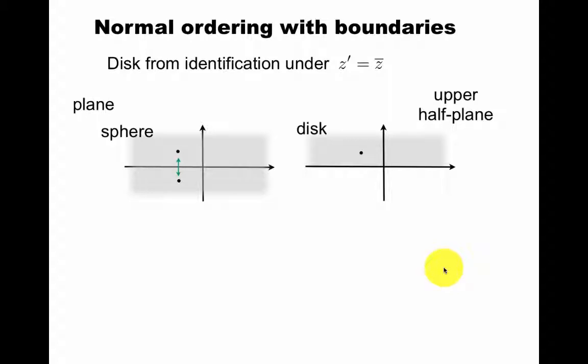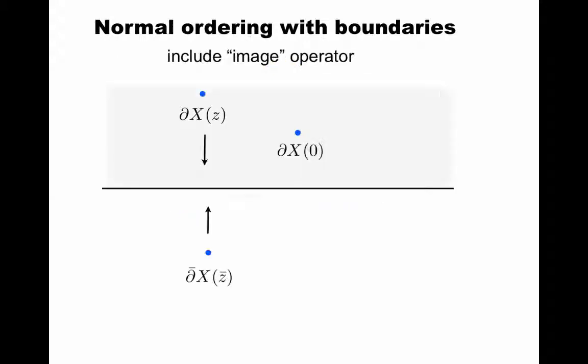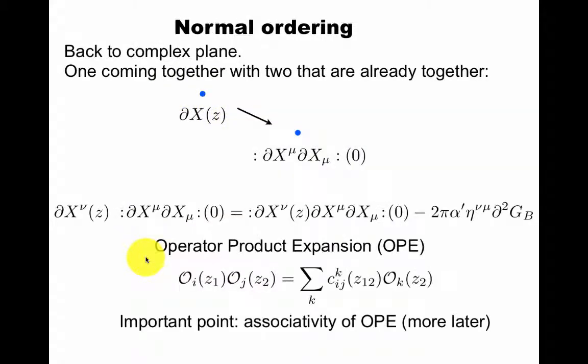We can also do this with boundaries. If we get the disk from the identification of the plane under z prime is z bar. By plane, by the way, some say sphere. By disk I mean the upper half plane. Then you can think of this as the method of images from electrostatics in physics. Originally this is just a general strategy for solving differential equations. You can introduce an image charge to simulate a boundary condition. So with boundaries we would need to include also not just this going to that, but also an image operator at the conjugate point. And later we'll do a doubling trick to actually write this in terms of an extended field on the whole domain.